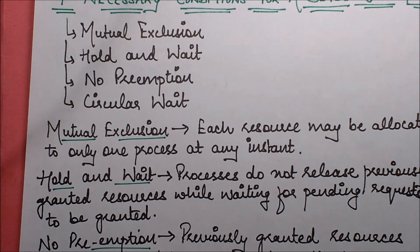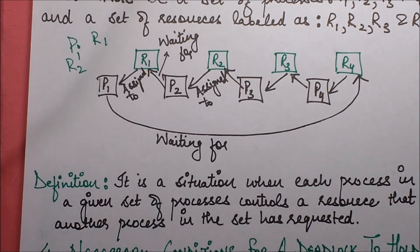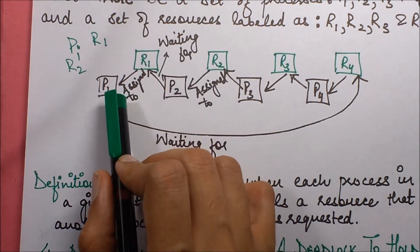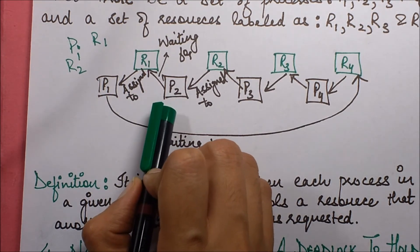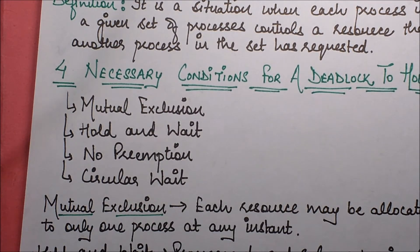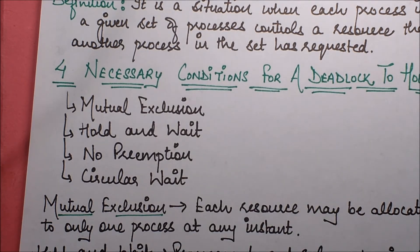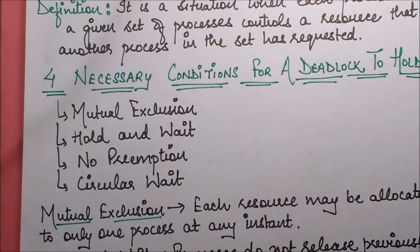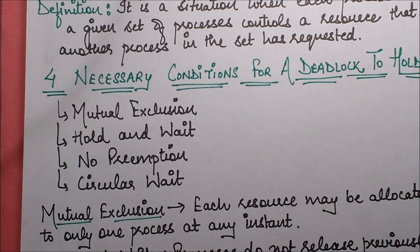Consider what would happen if sharing of resources were allowed. Going back to the scenario: if R1 could be shared between both P1 and P2, they would not be in deadlock. This is why these are called necessary conditions — if all four hold, deadlock cannot be avoided. But if I make any one of them false, I can break the deadlock. For example, removing the mutual exclusion constraint — allowing resource sharing — would avoid the deadlock scenario described above.